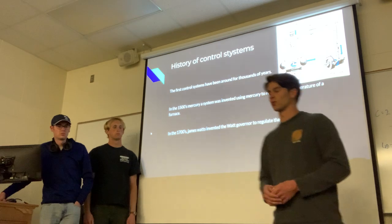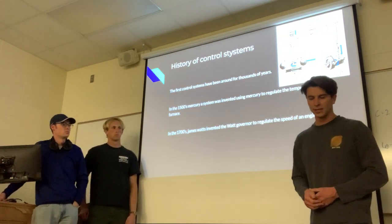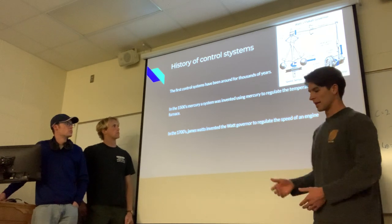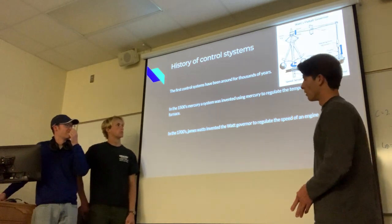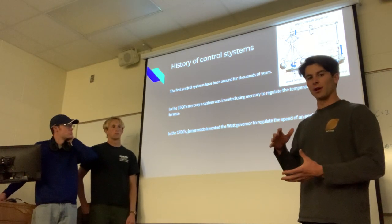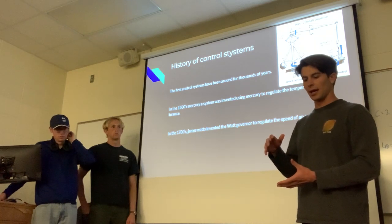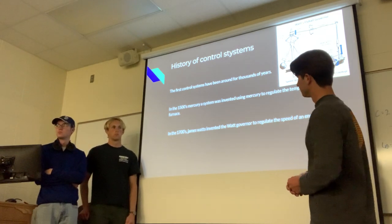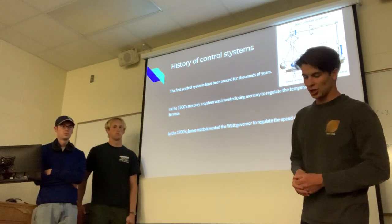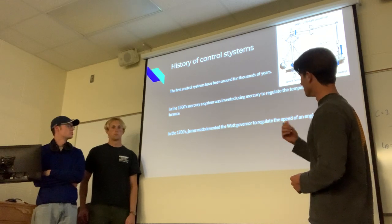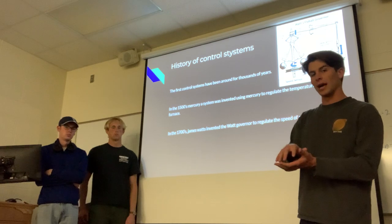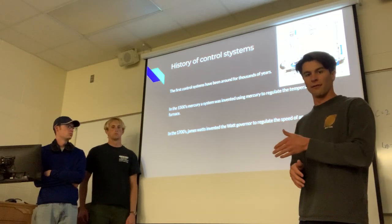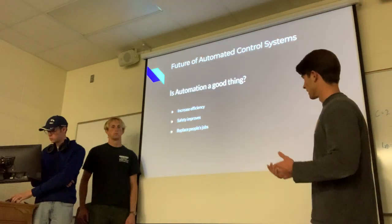The first examples of control systems have been around for thousands of years, since the early Egyptians. One of the first control systems ever recorded was during the 1500s, when mercury was used as an expansive metal that expanded during temperature changes and could help people regulate temperatures in a room. There was a man who used mercury so that when the temperature rose too high it would expand and turn a lever on his furnace to regulate airflow and control the overall temperature. James Watt is another early example, and other examples have been known throughout time.